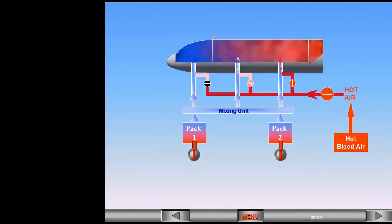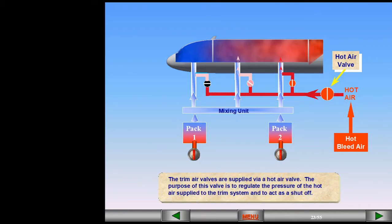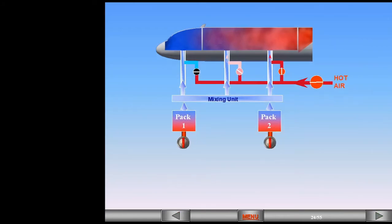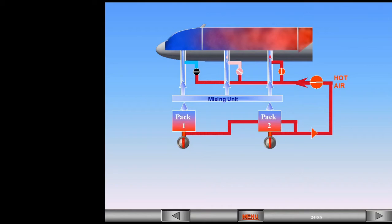The trim air valves are supplied via a hot air valve. The purpose of this valve is to regulate the pressure of the hot air supplied to the trim system and to act as a shutoff. The hot bleed air is supplied to the hot air valve from just downstream of the pack flow valves. This means that if the pack flow valves are closed, there is no air supplied to the trim system, and the hot air valve and the trim air valves will automatically close.